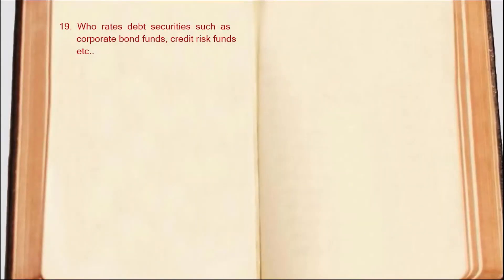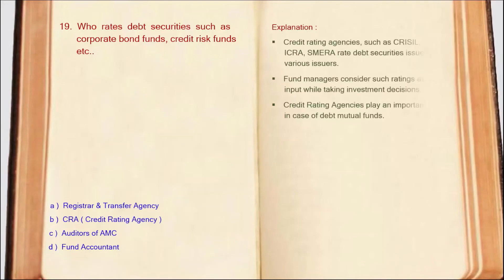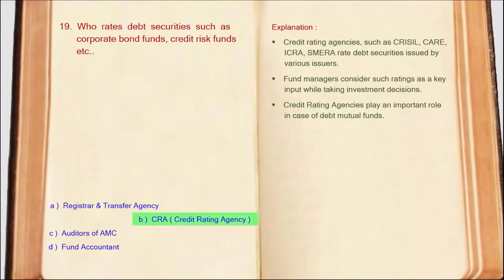Next question: Who rates debt securities such as corporate bond funds, credit risk funds, etc.? Credit rating agencies such as CRISIL, CARE, ICRA, and SMERA evaluate debt securities. Credit rating agencies play an important role in debt mutual funds, and fund managers consider these ratings while making investment decisions. So the correct answer is Option B: CRA (Credit Rating Agency).